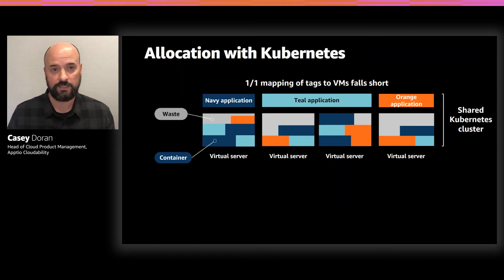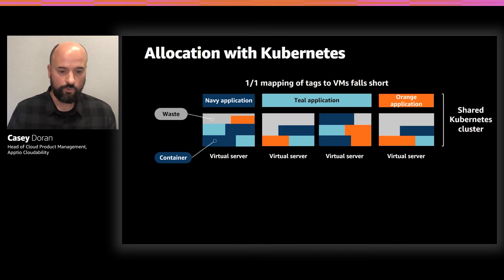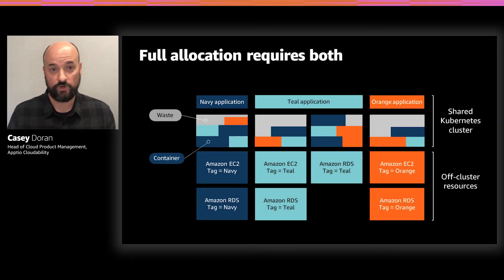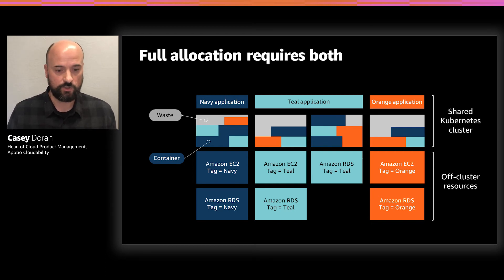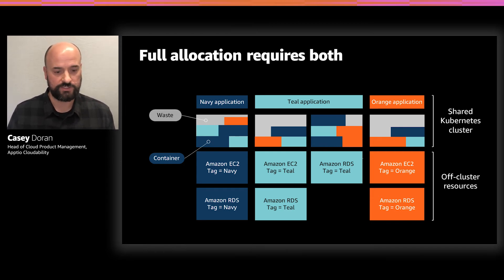Similarly, idle resources or waste is also shared across the entire cluster, and you need a method to dig into that for optimization. The reality is it's actually both — very few teams using Kubernetes are only using Kubernetes. They're also using resources like RDS, EC2 instances wholly owned by them, as well as Kubernetes workloads. We need a method that can accommodate both and fully allocate across both of these constructs.